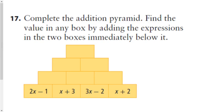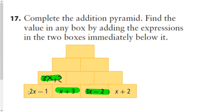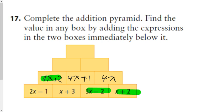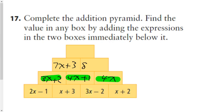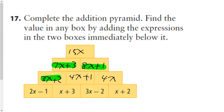Question 17 is an addition pyramid where the bricks below always add up to the brick above. This one is 3x plus 2; moving over, this one is 4x plus 1; and this one is 4x because the plus 2 and minus 2 cancel. Looking at these two, their sum is 7x plus 3. The one above that is 8x plus 1. Finally, the top brick is 15x plus 4.